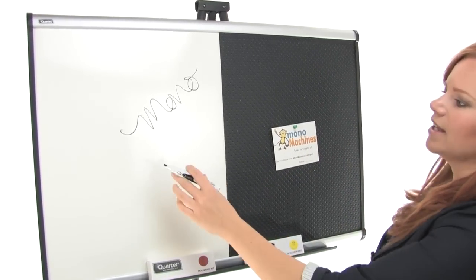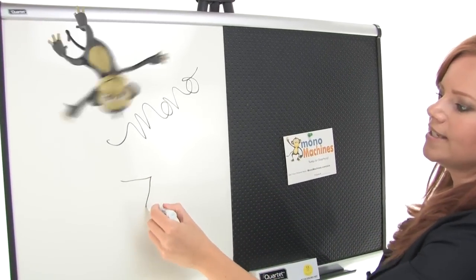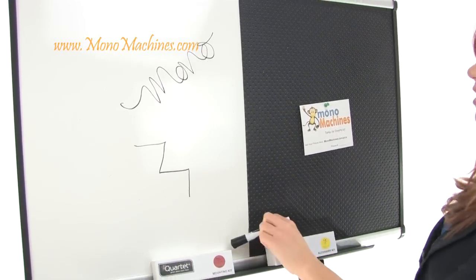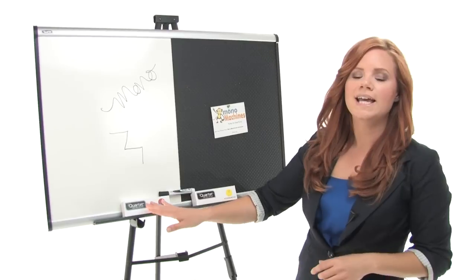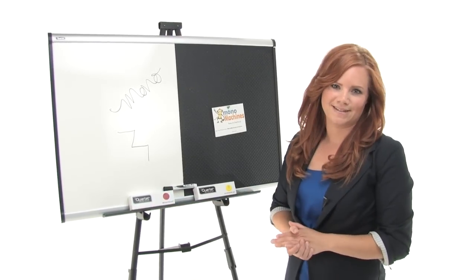I don't know if you can see there's a light grid pattern here to assist in writing alignment. This also comes with an easy mount hanging kit so you can secure the board to the wall in multiple places.